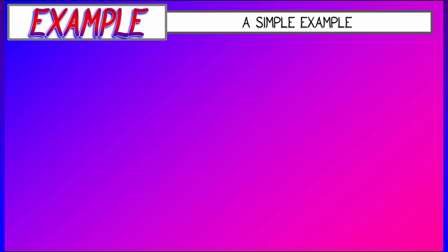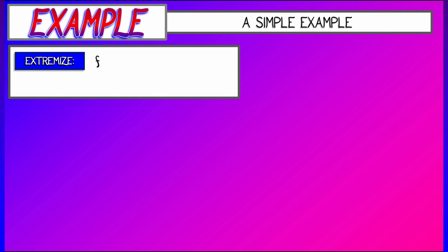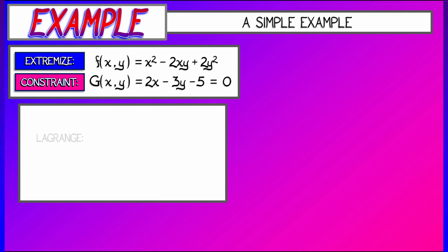Let's look at a simple example where we take a function. Let's say f is x squared minus 2xy plus 2y squared. Nice polynomial. We have to extremize this subject to the constraint that 2x minus 3y minus 5 equals 0. That's our function g, our constraint function.